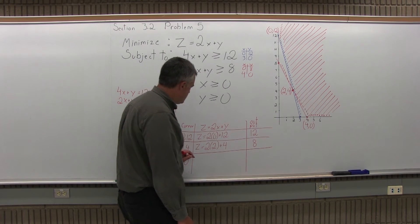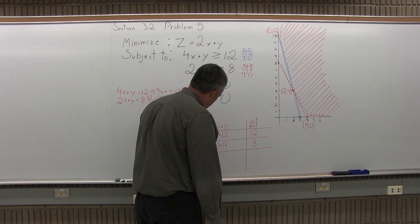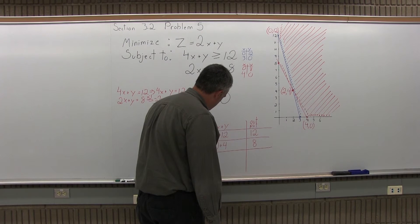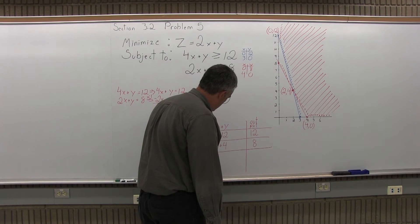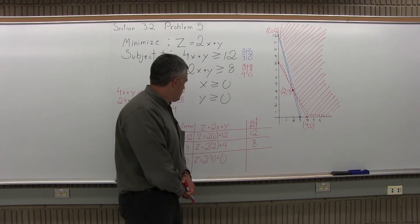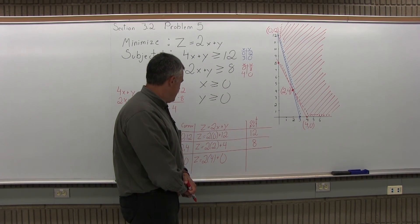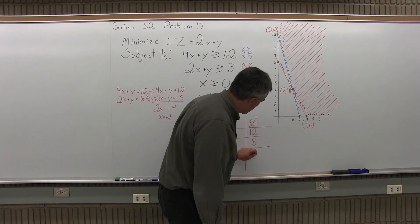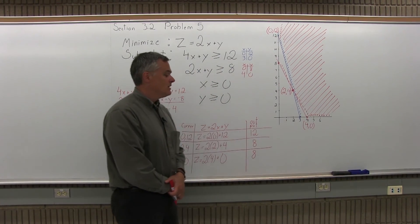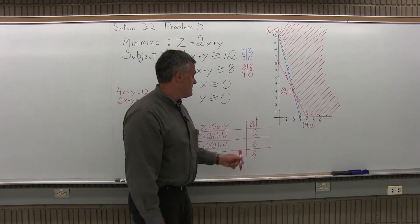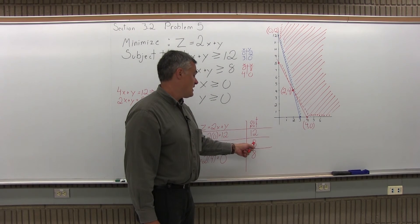And finally 4, 0 is my last corner point. So now when I put the 4, 0 in my object function, 2 times x becomes 2 times 4 plus y is plus 0. 2 times 4 is 8. And then 8 plus 0 is 8 again. So now we want to minimize this. The smallest output we can get is 8 because our choices are 12, 8 or 8 again.